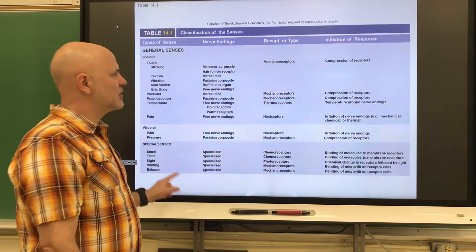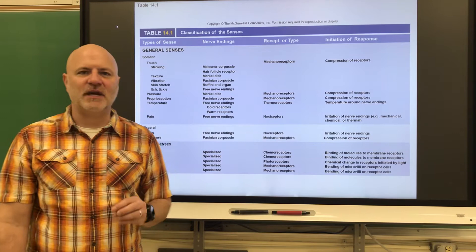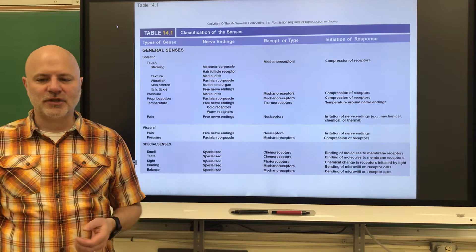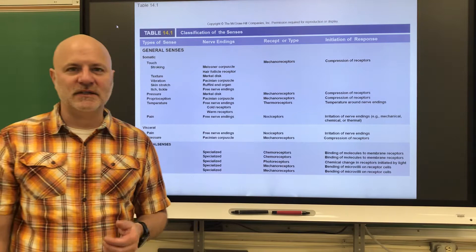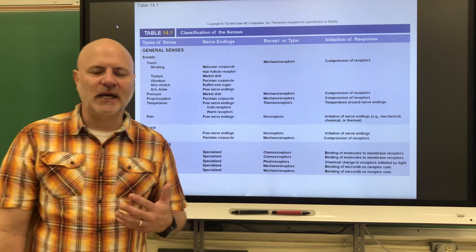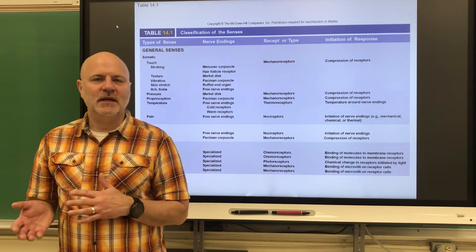Let's look at classification of stimulus types. First are mechanoreceptors, which sense touch, pressure, vibration, stretch, and itch. Next are thermoreceptors, which are sensitive to temperature changes. Photoreceptors are in our eyes and respond to light. Chemoreceptors respond to chemicals dissolved in solution — that's taste and smell. Lastly are nociceptors, which respond to pain.